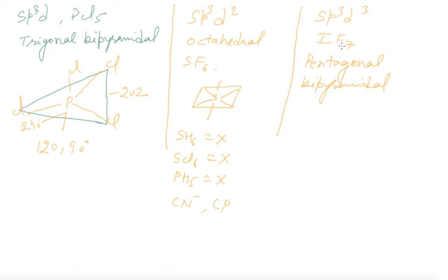Then SP³d³ - IF7 pentagonal bipyramidal. One more thing about bond order. Bond order one we are getting in MOT. One more way to get bond order: suppose this is benzene. Benzene has two resonating structures and three covalent bonds. The bond order is half. In carbonate there are three structures and four covalent bonds, so bond order will be four divided by three equals 1.33.